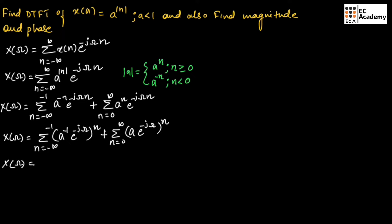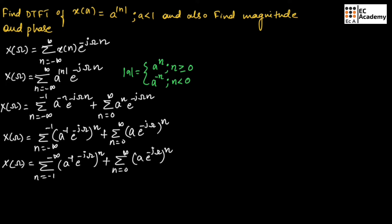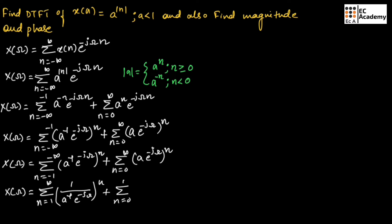We can interchange the summation limits. We can write x(ω) equal to summation from n = minus 1 to minus infinity of (a^(−1) · e^(−jω))^n, plus summation from n = 0 to infinity of (a · e^(−jω))^n. Making the limit of the first summation positive, we write it as summation from n = 1 to infinity of (a · e^(jω))^n, plus summation from n = 0 to infinity of (a · e^(−jω))^n.